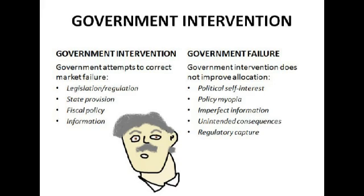So you could have legislation or regulation, which tends to increase competitiveness in the market and ensure consumer welfare is maximised. State provision is the next one — provision of goods and services, particularly merit goods like education and healthcare which would otherwise be underconsumed. They also provide public goods. Fiscal policy includes indirect taxes, subsidies, even direct taxes to redistribute income more fairly. And improving the quality and availability of information can help move spending away from demerit goods onto merit goods.